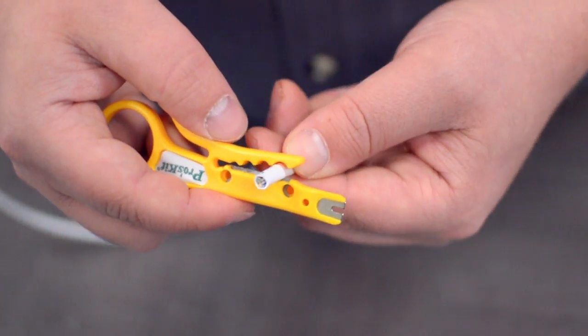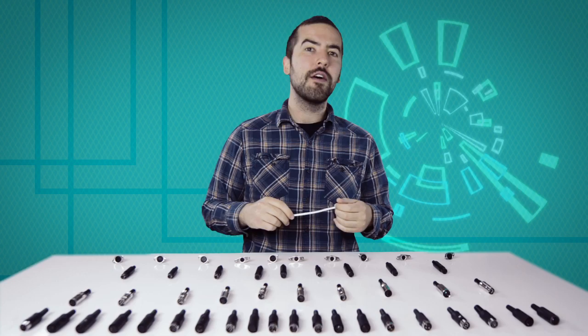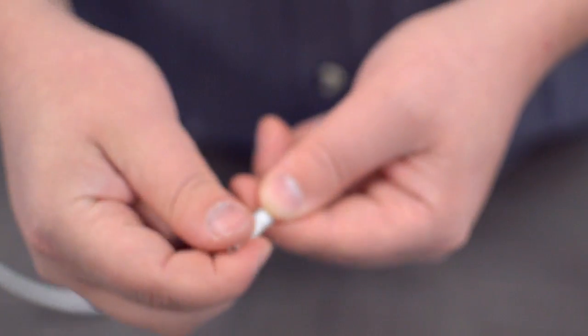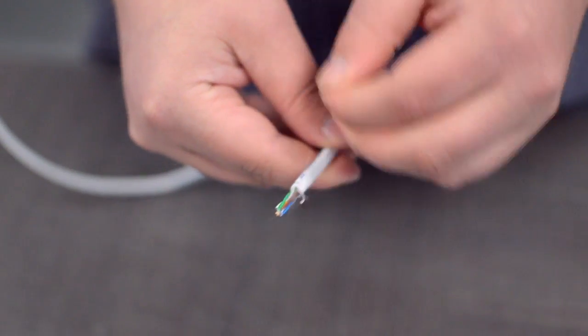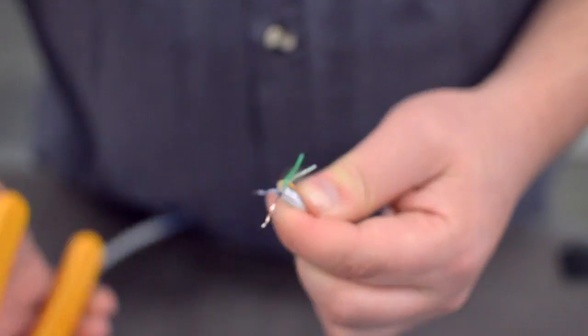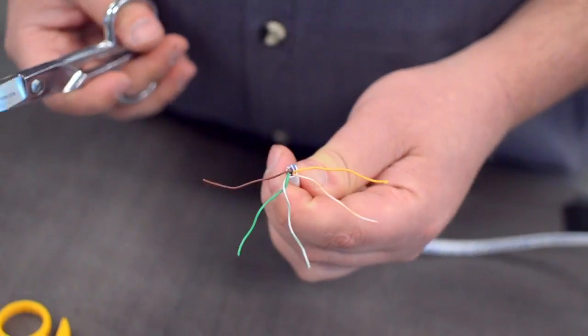Then strip the cable jacket using the wire strippers. For this example, we will be using CAT 5E cable. You will also need to strip the individual conductors. Trim off any additional conductors if needed.